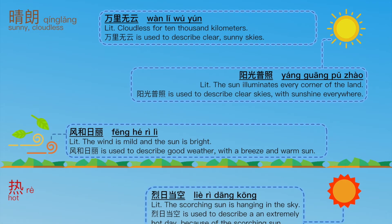Idioms that describe sunny, cloudless days. 形容晴朗天气的成语。 万里无云 — Cloudless for 10,000 kilometers. 万里无云 is used to describe clear, sunny skies. 阳光普照 — The sun illuminates every corner of the land. 阳光普照 is used to describe clear skies with sunshine everywhere. 风和日丽 — The wind is mild and the sun is bright. 风和日丽 is used to describe good weather with a breeze and warm sun.